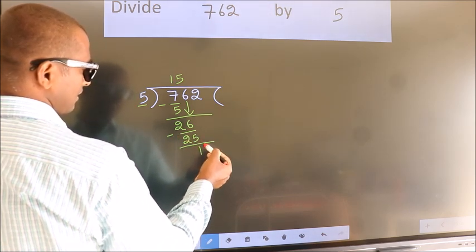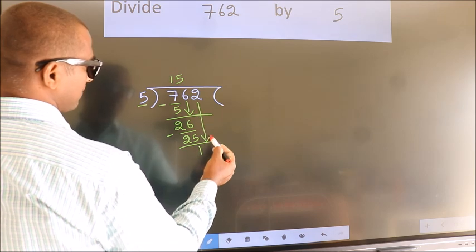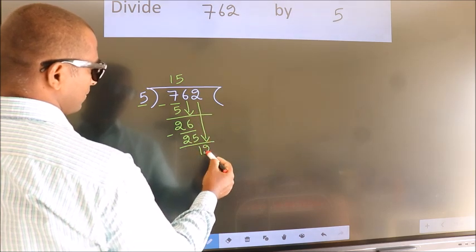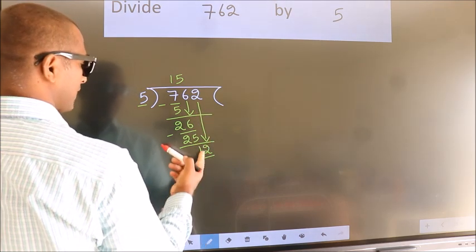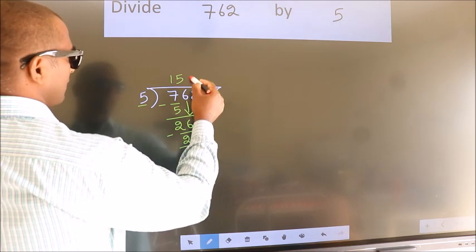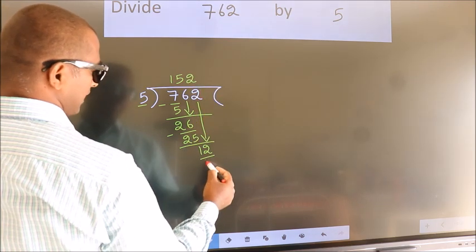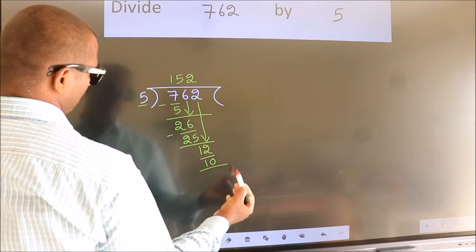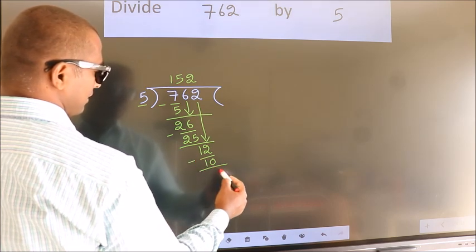After this, bring down the beside number. So, 2 down. So, 12. A number close to 12 in the 5 table is 5 twos 10. Now we subtract. We get 2.